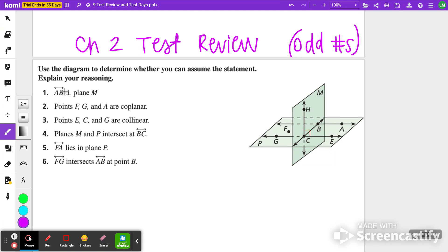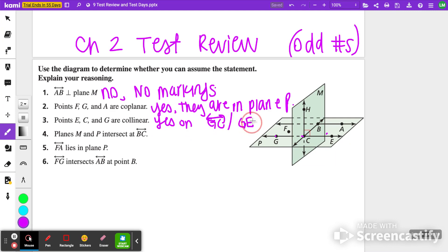Number one says use the diagram to determine if you can assume the statement. It says line AB is perpendicular to plane M. In this case, we can say no because there's no indication or markings. For number two, points F, G, and A are coplanar. Yes, they are in plane P. For number three, points E, C, and G are collinear. Here is E, C, and G. Yes, they are all on the same line, so yes, on line GC or line GE, that would work as well.